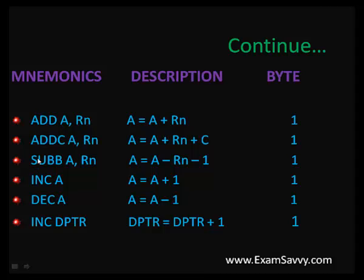For subtraction, we have only SUBB — subtract with borrow. Even if a borrow occurs, we use SUBB. There is only one subtraction instruction available in 8051. As with addition, the result is stored in the first operand A, and the size is 1-byte.